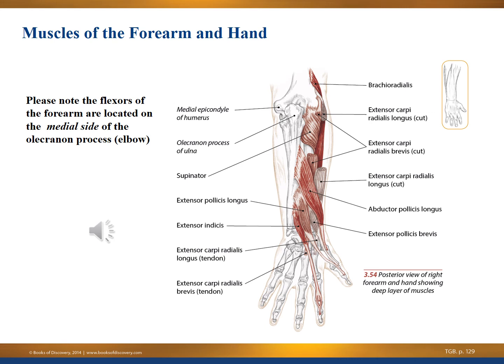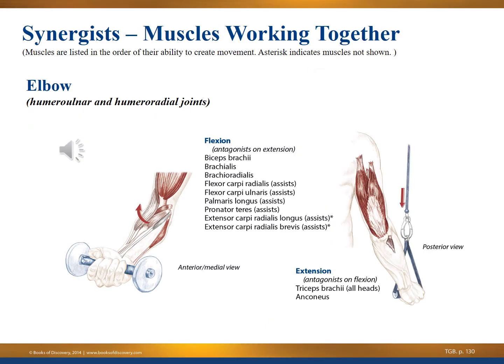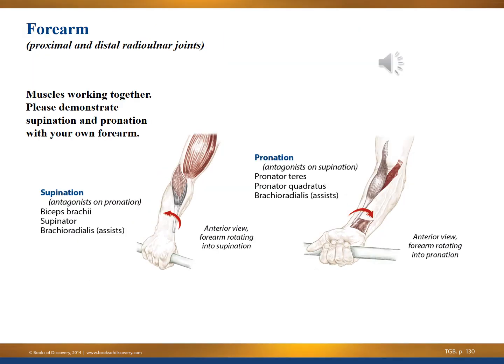Looking at the deeper muscles of the forearm and hand, note that the flexors of the forearm are located on the medial side of the olecranon process — the elbow — of the ulna. Synergists work together to flex or extend at the elbow joint. The humeroulnar and humeroradial joints are other names for the elbow joints — where the humerus, ulna, and radius come together. Synergists also work together to produce supination and pronation; go ahead and demonstrate that movement with your own forearm.